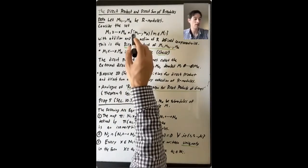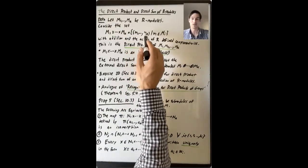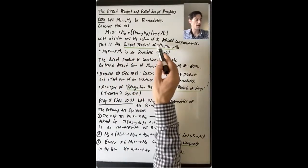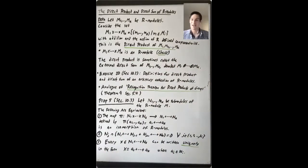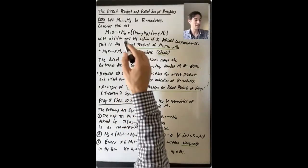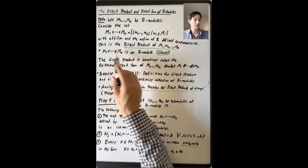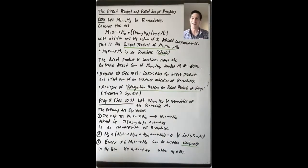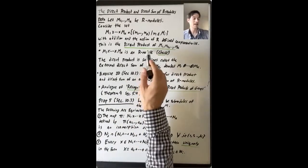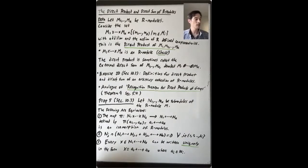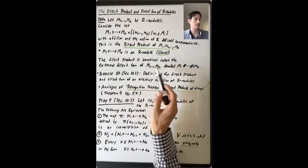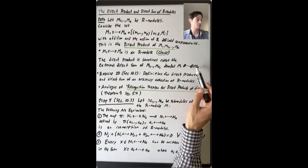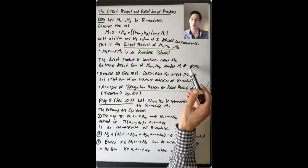R acts on a tuple by acting on M1, acting on M2, acting on Mk. This set is the direct product of M1 up through Mk. With this addition and action of R, this direct product is an R-module. You should check that — it's not hard to verify the axioms. This direct product is sometimes called the external direct sum of M1 up through Mk, denoted M1 ⊕ M2 ⊕ ... ⊕ Mk.